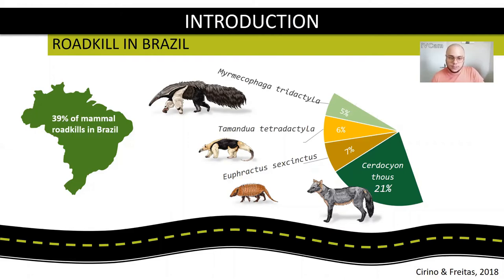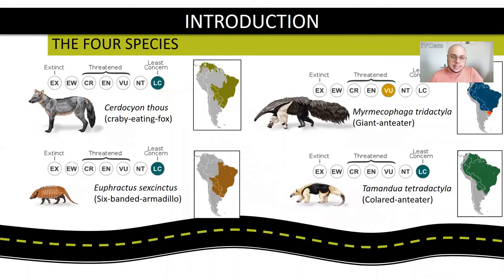and Myrmecophaga tridactyla representing about 39% of the total mammals road killed in Brazil. We can see the degree of threat for each of four species and the occurrence range of them, with special attention for the giant anteater, the Myrmecophaga tridactyla, that is considered vulnerable by IUCN and already extinct in some regions in Brazil, as Rio Grande do Sul, Rio de Janeiro, and Espírito Santo states.